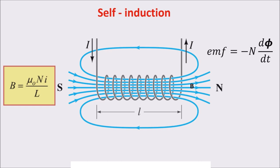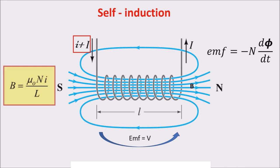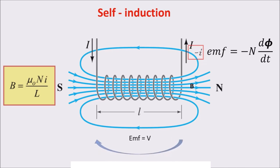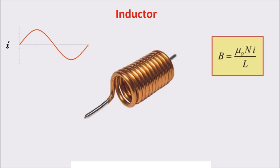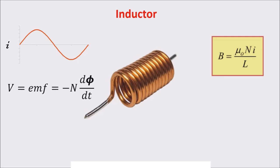This induced voltage tries to oppose the changing. So if the current is increasing, the EMF creates a current which opposes this rise, and if the current is decreasing, the EMF creates a current which always opposes this changing. The inductor name comes from this induction effect: a variable current creates a variable magnetic field, so a variable magnetic flux, which in turn generates an EMF or voltage. It exploits the self-induction phenomenon.